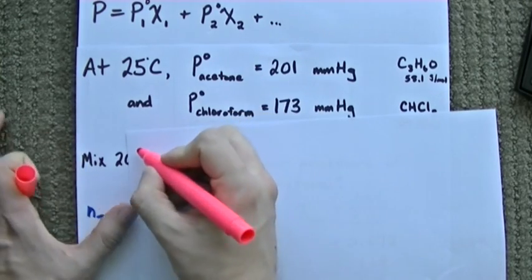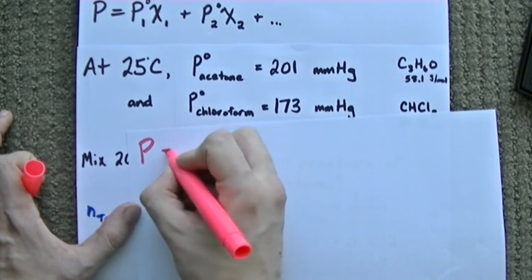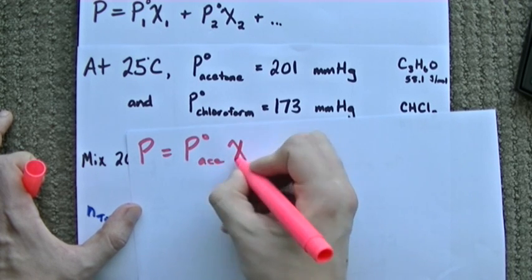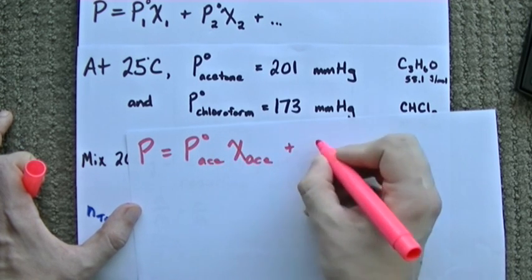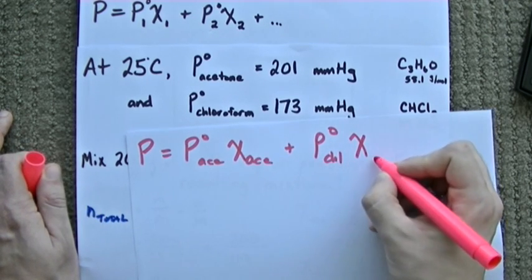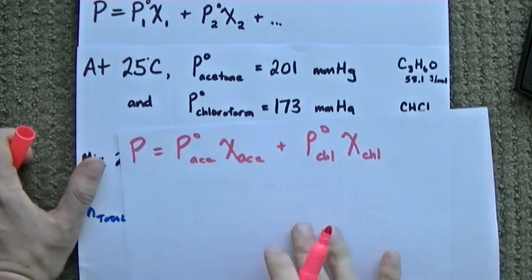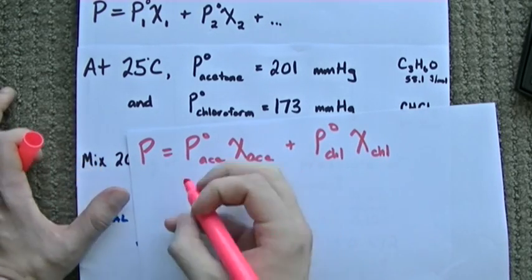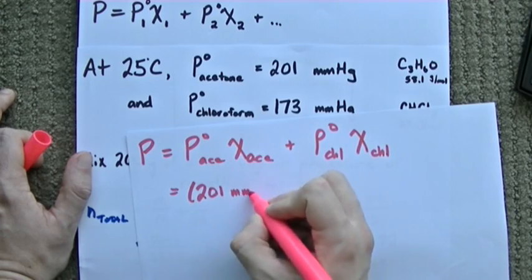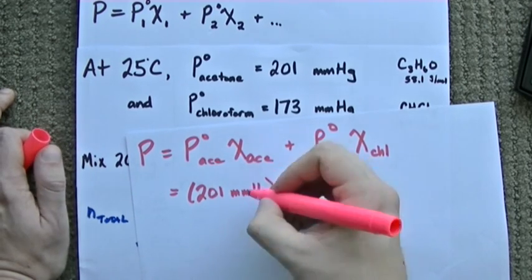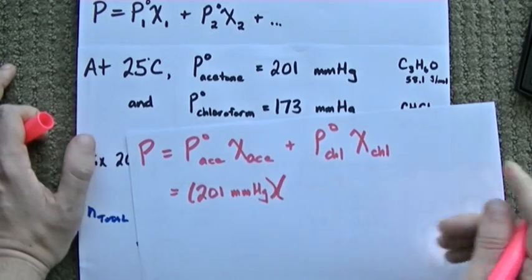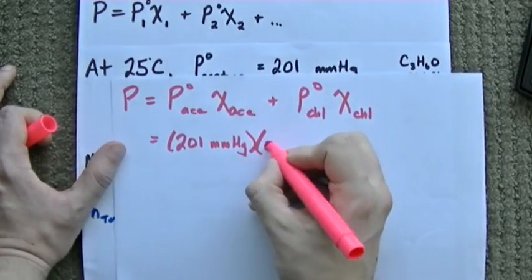Let's use pink. The total vapor pressure of the mixture is the vapor pressure of pure acetone times the mole fraction of acetone plus the vapor pressure of the chloroform times the mole fraction of chloroform. So, the vapor pressure of pure acetone was 201 mmHg. Doesn't matter what the units are as long as the pressure units match here. Times the mole fraction of acetone, 0.672.